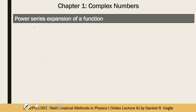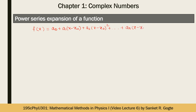Let's first discuss the power series expansion of a function. Suppose we have a function f(x). It can be expanded as a₀ + a₁(x − x₀) + a₂(x − x₀)² and so on, up to aₙ(x − x₀)ⁿ — this is an infinite series. The a's are called coefficients and x₀ is a constant; the function is said to be expanded about the point x₀. This expansion is particularly useful when |x − x₀| is small, because higher powers decrease as n increases, allowing f(x) to be approximated by a finite number of terms.